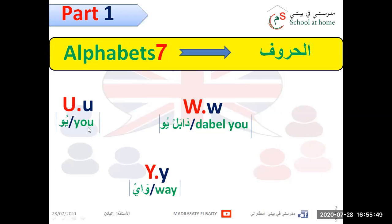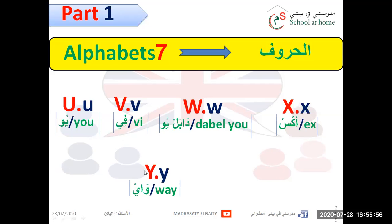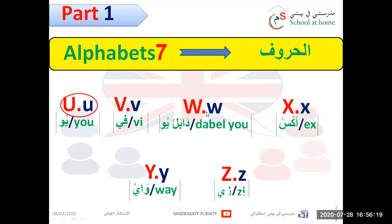Continue. U, V, W, X, Y and Z. U like umbrella. V like vase. W like window. X like xylophone. We have just one vowel here, and sometimes Y.